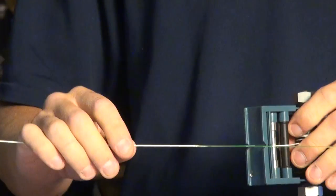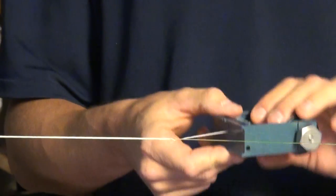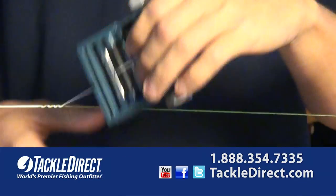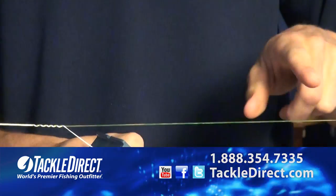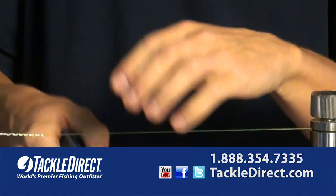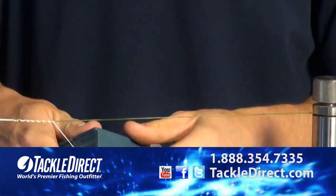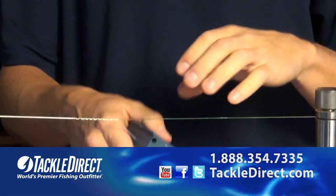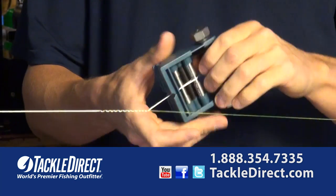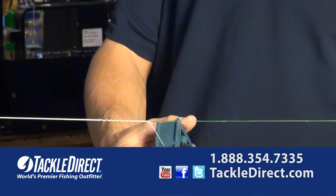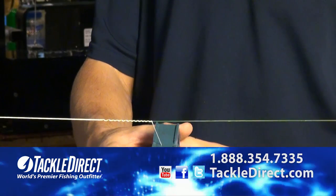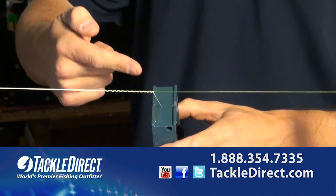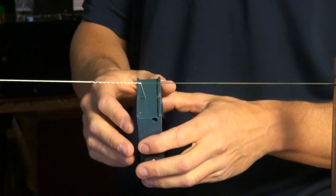Then we're going to do our serve. We start our serve by taking that tag end and doing a series of loose twists up the monofilament. We're going to go about three inches up on there. Then what we're going to do is pinch the line here and the goal is to get the bobbin to begin re-wrapping over the twists that we've already done.